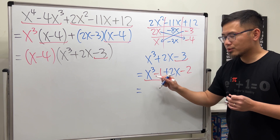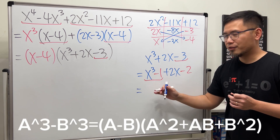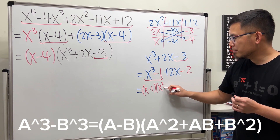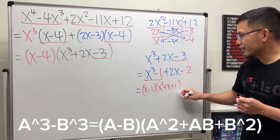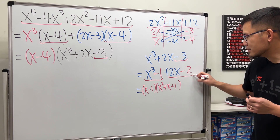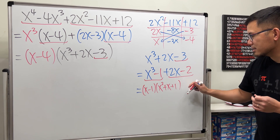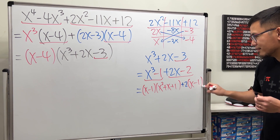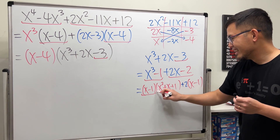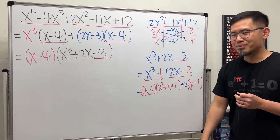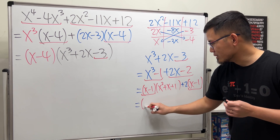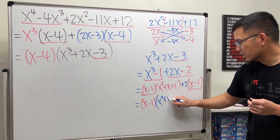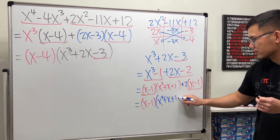Now, the first two terms — x to the third power minus 1 — this is a difference of two cubes. We get x minus 1 times x squared plus x plus 1. And then for the last two terms, we can factor out 2, and that's a positive 2, so plus 2, and we get x minus 1. We have x minus 1 in common, so we can factor that out — and then we will have x squared plus x plus 1 and then plus 2.